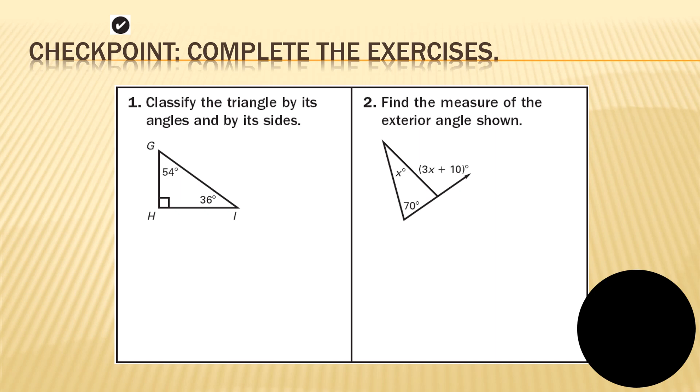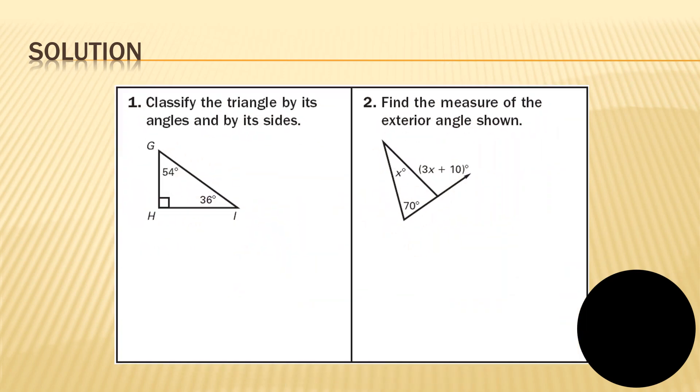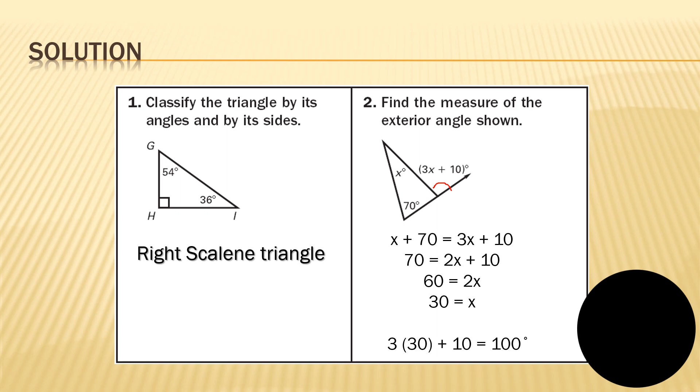Complete the exercises below. Number 1: Classify the triangle by its angle and its sides. And then, find the measure of the exterior angle shown. Let's see the solution. Classify the triangle by its angles and its sides. That means this is right scalene triangle. So, if we are going to find the measure of the exterior angle, that is 3X. So, X plus 70 equals 3X plus 10. So, 3X minus X is 2X plus 10. That means 70 minus 10 equals 2X divided by 2, X equals 30. So, 3 times 30 equals 90 plus 10 is 100. So that means this is 100 degrees.